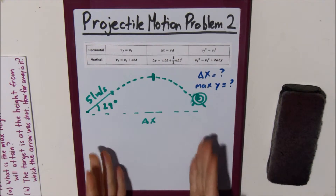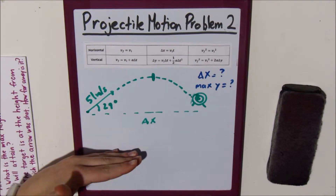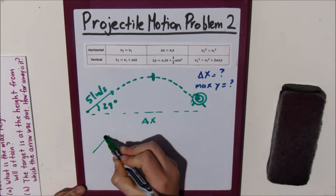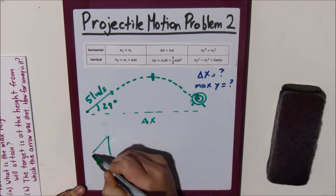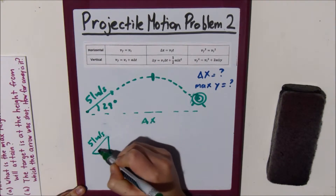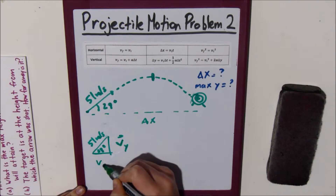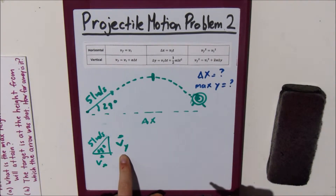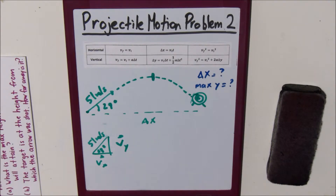Before we can do anything, we should figure out the horizontal and vertical components of the velocity. Because unlike the last problem, this arrow is shot at an angle, so it has both vertical and horizontal velocity. Let's draw a little triangle — 51 meters per second at 29 degrees — so we can find vy and vx: the initial vertical and horizontal components of the velocity.